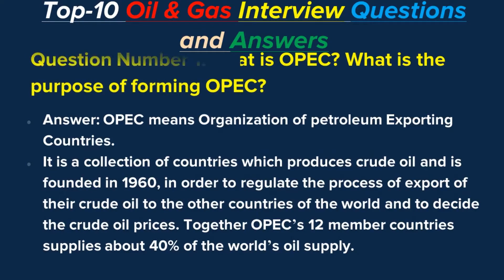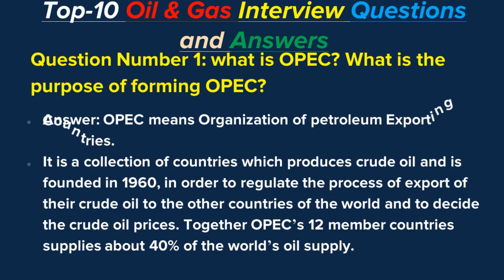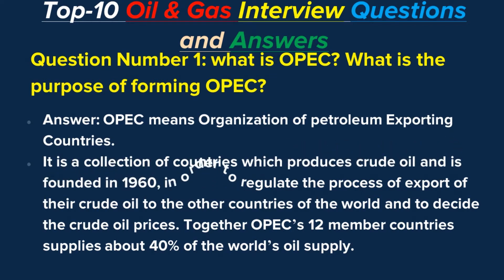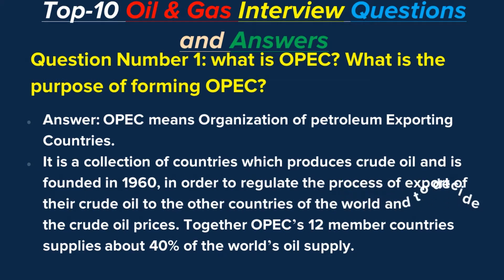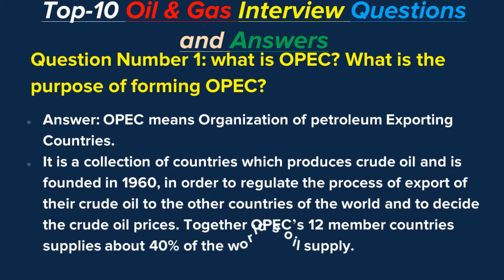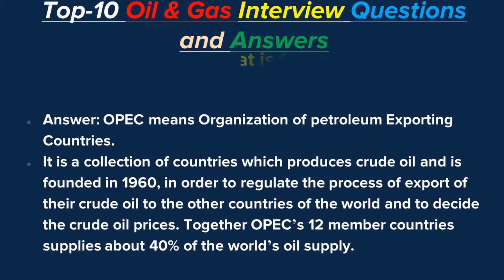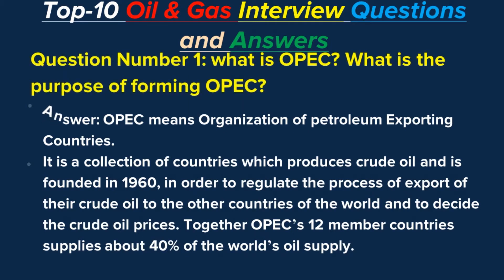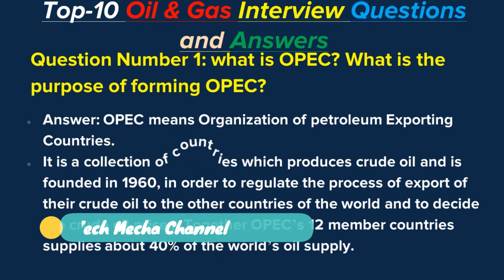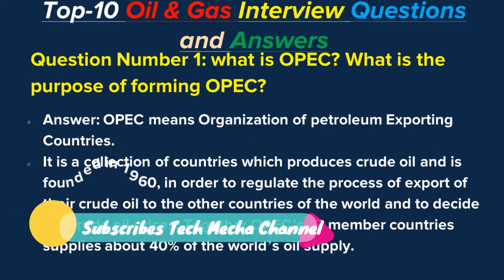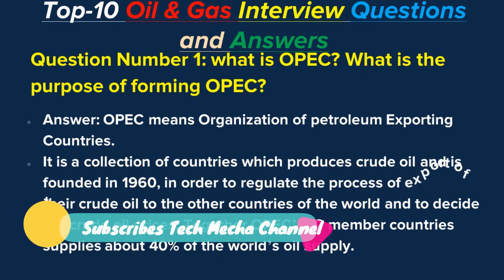Question number one: What is OPEC? What is the purpose of forming OPEC? Answer: OPEC means Organization of Petroleum Exporting Countries. It is a collection of countries which produces crude oil and was founded in 1960, in order to regulate the process of export of their crude oil to other countries of the world and to decide the crude oil prices. Together, OPEC's 12 member countries supply about 40% of the world's oil supply.